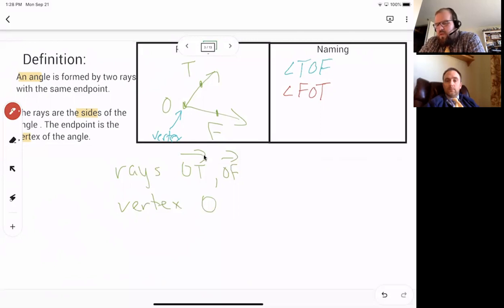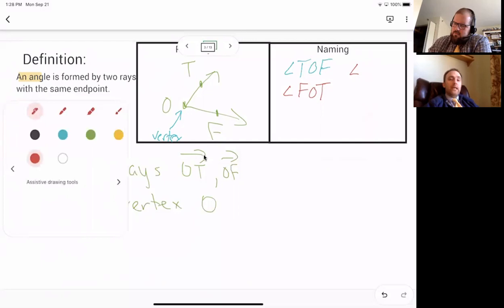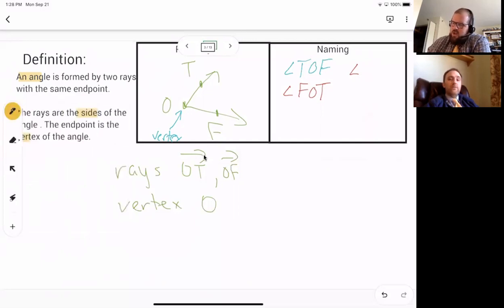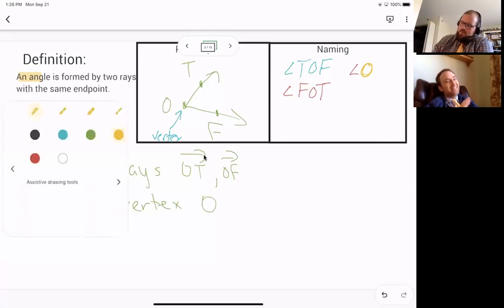And I guess talking about the angle doesn't really matter if I go forwards or backwards. So I could call this angle FOT as well. And that's an okay thing. That's like with the segments and the lines, but not the rays. And what if I'm feeling really lazy? Like, would it be okay to call this just like angle T? No. How come? Because that is not the vertex of the angle.